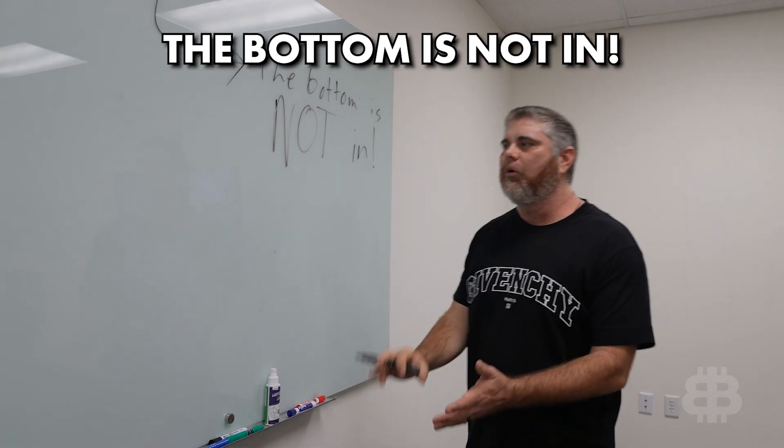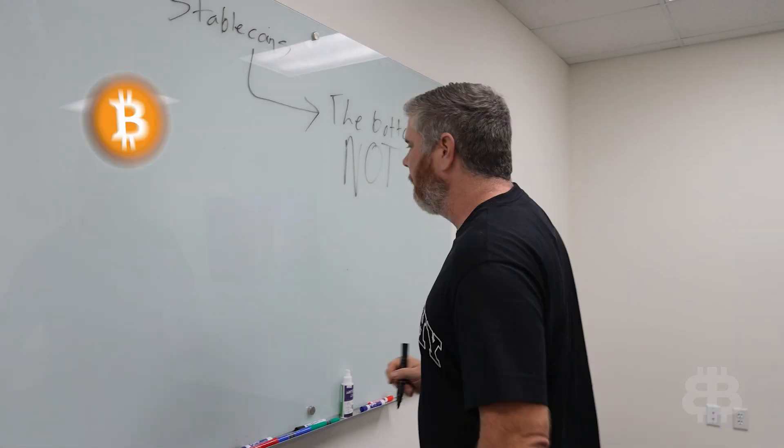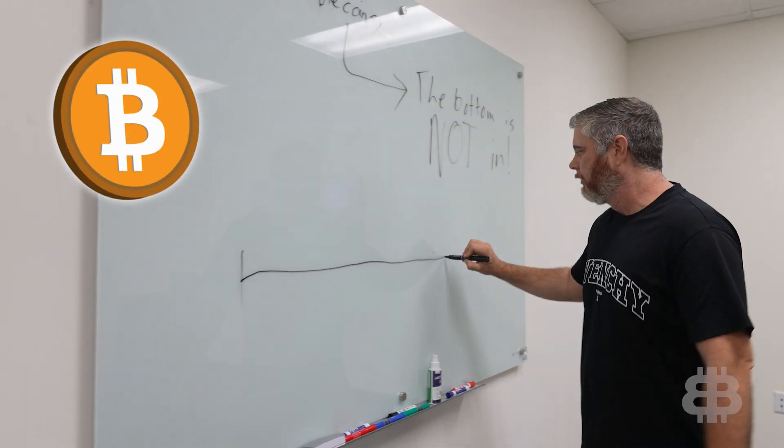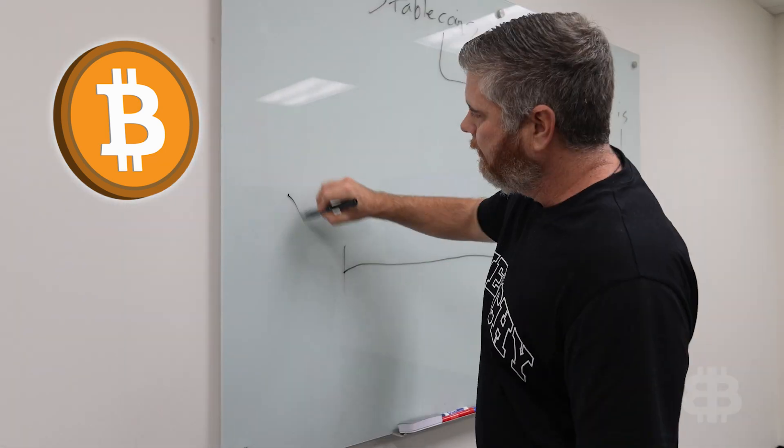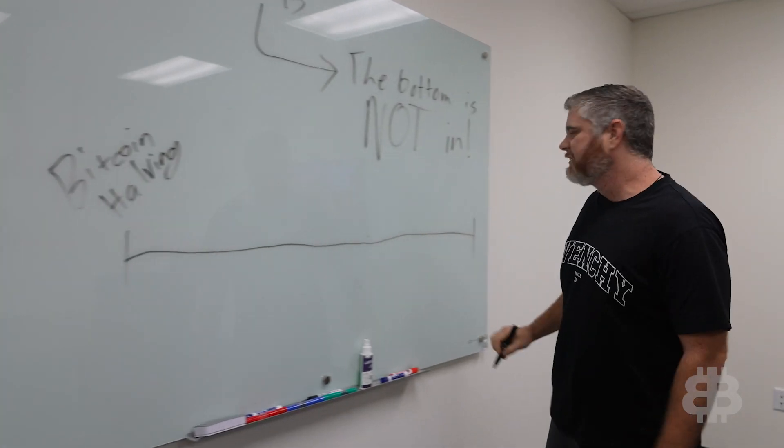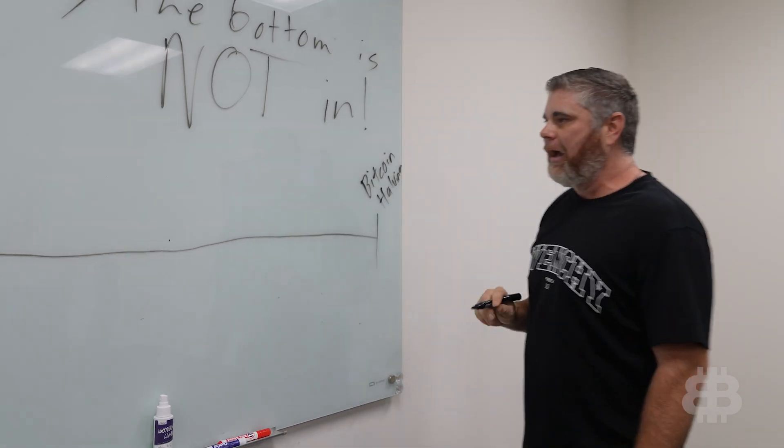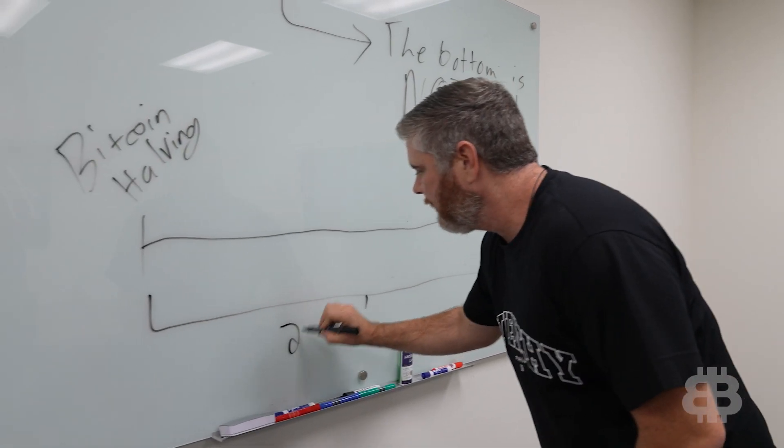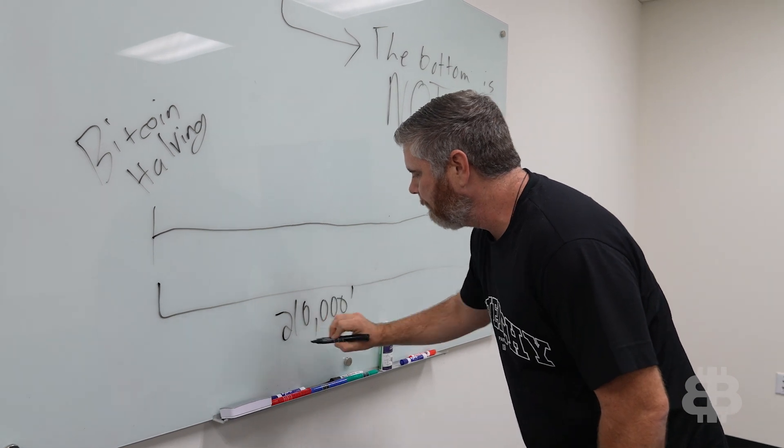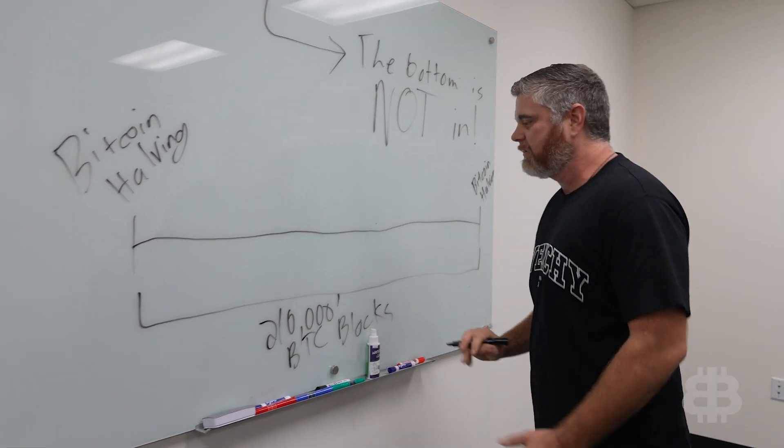Bottom is not in. Why do I believe that? Well, when it comes to Bitcoin, think of a timeline here. We think about this being the Bitcoin halving, this being the Bitcoin halving. These are going to run from halving to halving here. Now, how long is this time period? 210,000 BTC blocks mined. Now, what is this equal in time?